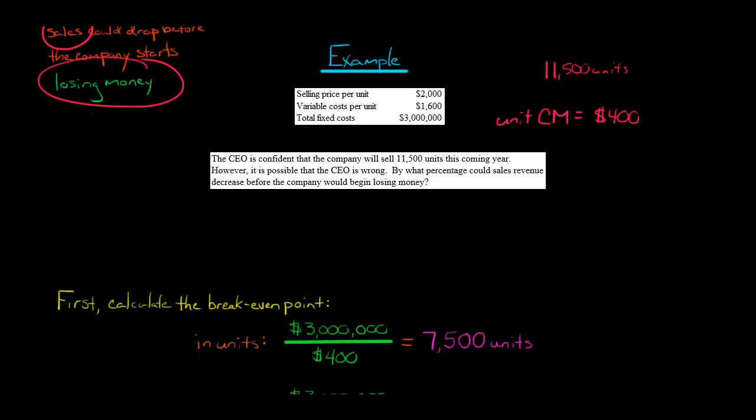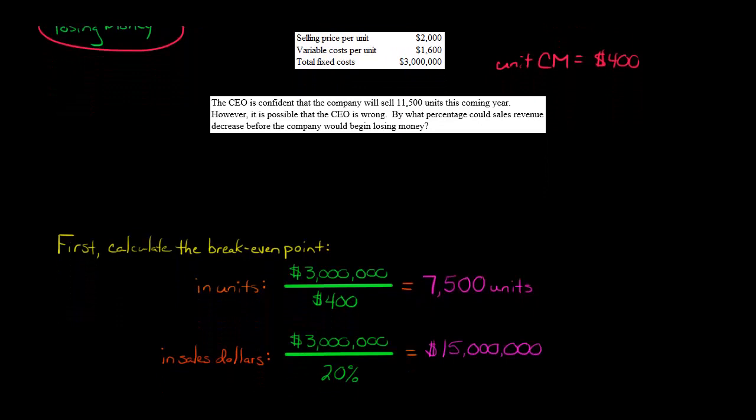We could also do this in sales dollars. And again, you don't have to do it. I'm just going to show you each way. In sales dollars, it would be $3 million of fixed costs divided by the contribution margin ratio. So the CM ratio is going to be the $400, the unit contribution margin, divided by the selling price per unit. This is $2,000. So that's 0.2 or 20%. So $3 million divided by 20% is $15 million.